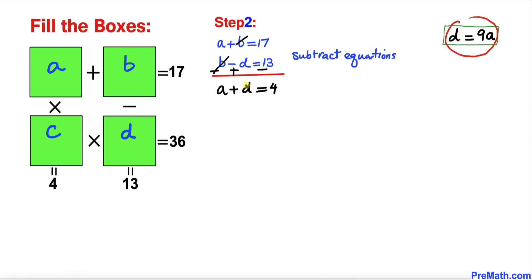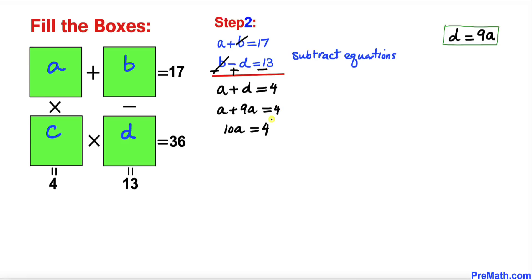We know from the previous step that D equals 9A, so replacing D gives us A plus 9A equals 4, which simplifies to 10A equals 4. Dividing both sides by 10, our A value turns out to be 0.4.